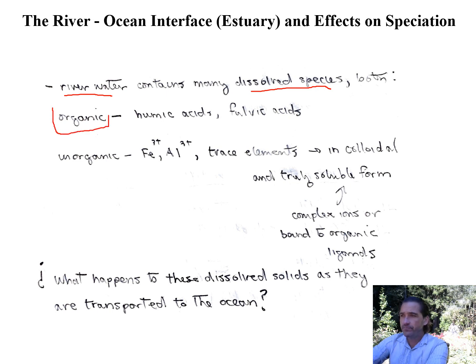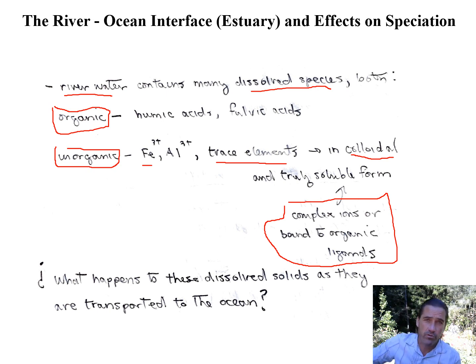In the river water we have a lot of different dissolved species. We have a lot of organics such as humic acids, fulvic acids, and we have a lot of inorganic material, things like trace elements and iron and aluminum, colloids, and a lot of these materials are complex ions or bound to organic ligands. We'll look at how trace metals are affected and also things like iron which are actually a high concentration in rivers. So what happens to these dissolved solids as they're transported to the ocean? That will be what we cover in this lecture.